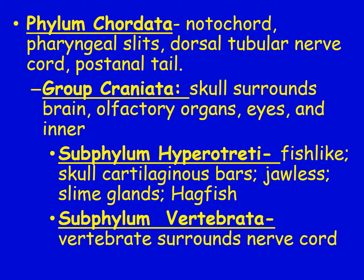Make sure to add the inner ear — that got cut off on this slide. Going down from phylum to subphylum, we have Hyperotreti. These are fish-like but not true fish; their skull has cartilaginous bars, so it's not a solid skull. They are jawless and have slime glands. An example is hagfish. Then there's subphylum Vertebrata, where vertebrae surround the actual nerve cord.